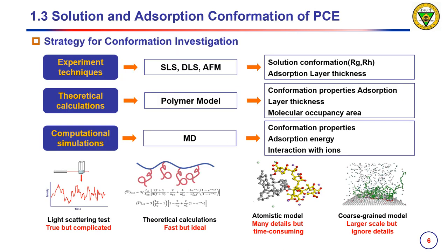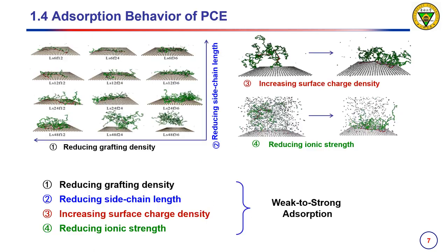We have tried different methods to understand what is happening at the microstructure level. To investigate the conformation of PCE, different strategies are developed, including experimental technologies, DLS-AFM, theoretical calculation, and computational simulation. Based on the above-mentioned models, we can simply design the molecule to get higher adsorption affinity by reducing grafting density, reducing side-chain length, increasing surface charge density, and reducing ionic strength.